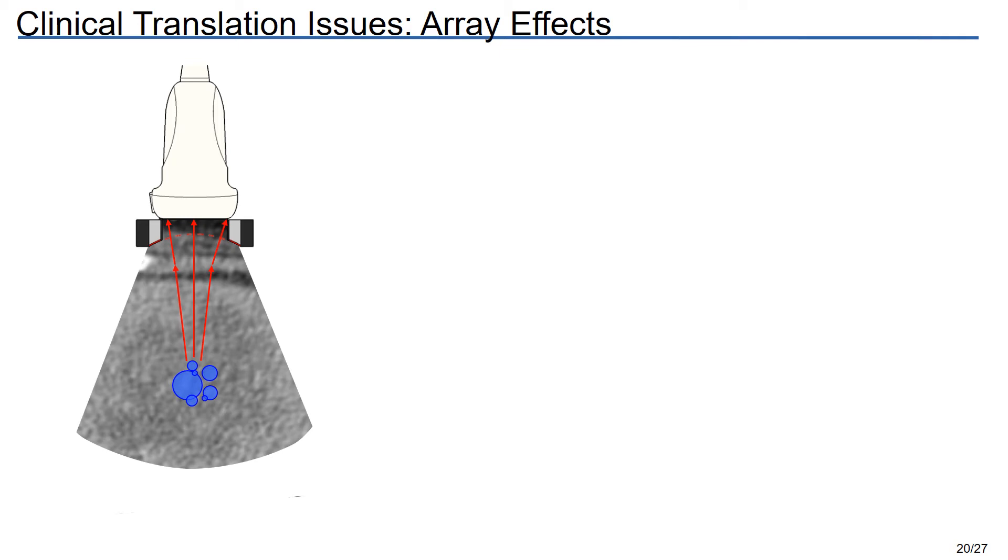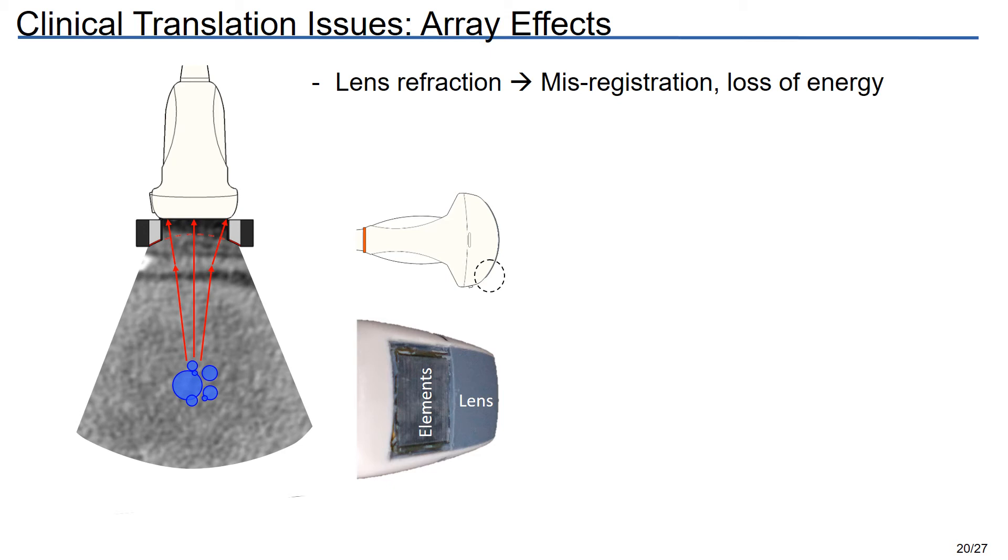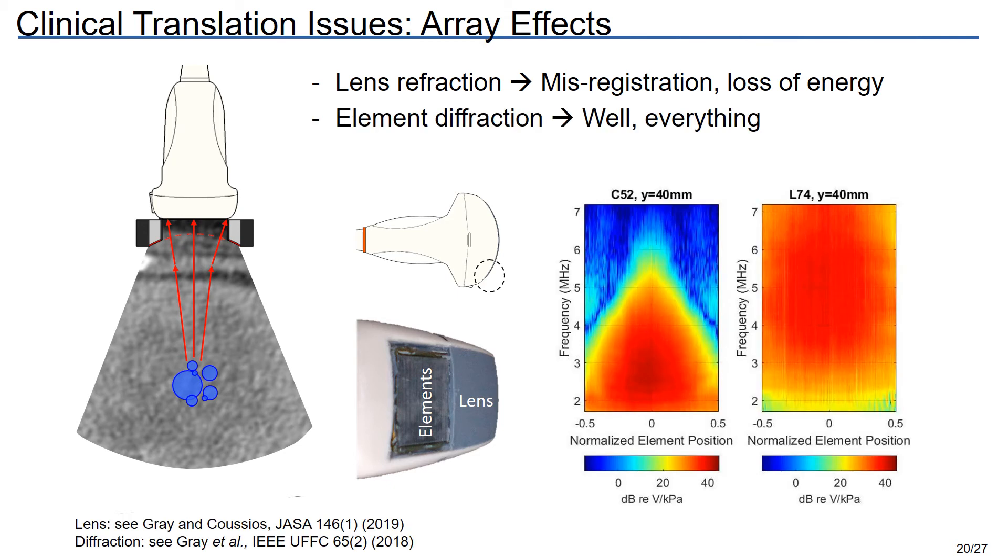Once the bubble signals do reach the array, the array itself can have a big influence on the beamformer output. The first thing that the signals reach when they hit the array is the covering lens, and owing to its low sound speed and curvature, we get some refraction through the lens, which leads to misregistration of the PAM image and some loss of energy. A simple way to think about this is that there's a PAM-specific lens correction, and it's not the same thing as a B-mode lens correction. But a much, much larger effect comes from element diffraction. So here, the finite size of the array elements and the fact that they have an elevation focus leads to a very strong position dependence on their response. So both the position of the elements on the array and the position of the source will matter in terms of the response you see.